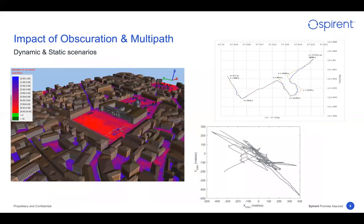Now that we've seen what multipath is, let's understand what multipath can do in terms of performance. On the screen you see two different scenarios — one dynamic, one static. The plot on top is a dynamic scenario showing trajectory information. The route in red is the ground truth route; the route in blue is the receiver-computed trajectory. You can see that multipath can impact trajectory information significantly. The scale is in latitudes and longitudes in degrees, so the error might not look large, but it is of significant magnitude in meters — all coming from multipath on a receiver with no multipath mitigation.